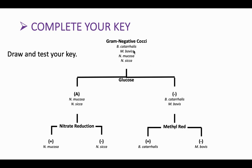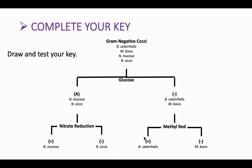In step two, we decided that the first differentiating test would be glucose, and that the two genera could be divided by those that produce acid and those that were negative. Then we could separate this first genera by the nitrate reduction test — one that was positive, one that's negative — and bovis is negative for methyl red while the other is positive.